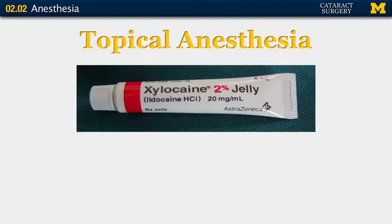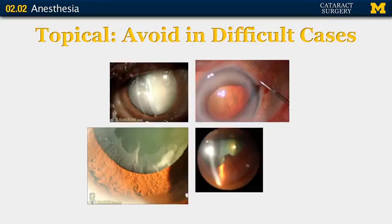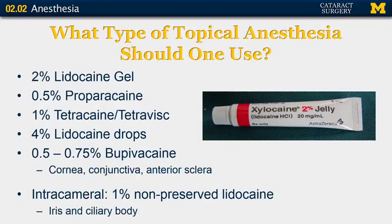The most common form of anesthetic used now is topical anesthesia. Good topical candidates include patients who are relaxed and don't have high anxiety, who can tolerate bright lights, hear and communicate well, and follow directions. Especially as a beginning surgeon, avoid topical anesthesia in cases anticipated to be difficult — such as patients with a white mature cataract, those with IFIS who have potential for iris prolapse, pseudo-exfoliation, or posterior synechiae. There are several topical anesthetics available: 2% lidocaine gel, 1.5% proparacaine, tetracaine or TetraVisc, 4% lidocaine drops, and bupivacaine. These anesthetize the cornea, conjunctiva, and anterior sclera. Often these are used in conjunction with intracameral anesthetic placed in the anterior chamber.